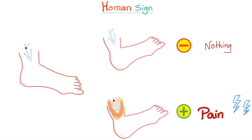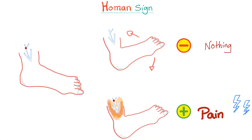Here is how you perform the Hohmann sign. You hold the patient's ankle, making sure the patient is relaxed and not tense — try lateral circumduction to put the patient at ease. Then suddenly dorsiflex the foot. Dorsiflexion is this action, and plantarflexion is the opposite. Normally, when you dorsiflex, absolutely nothing should happen. But if the patient has DVT, you might get a positive Hohmann sign. A positive Hohmann sign means that on dorsiflexion of the ankle, the patient experiences pain, discomfort, flexure, or resistance.